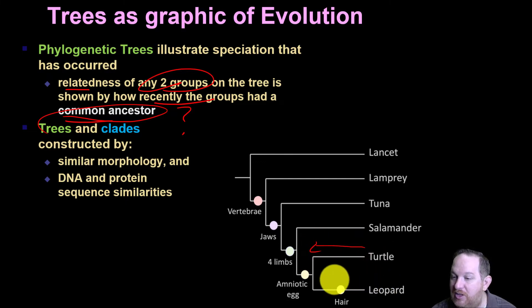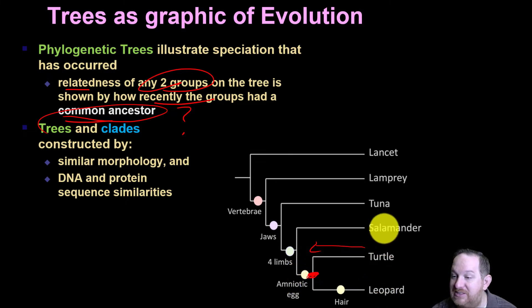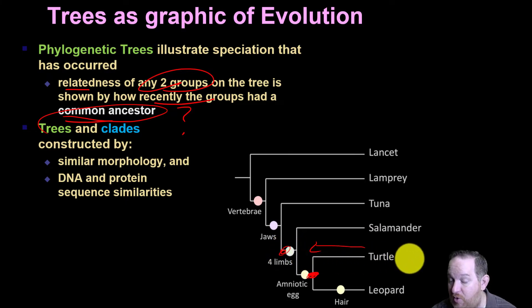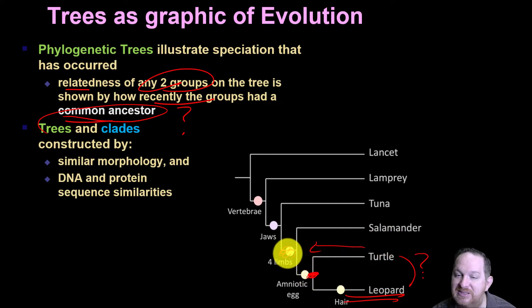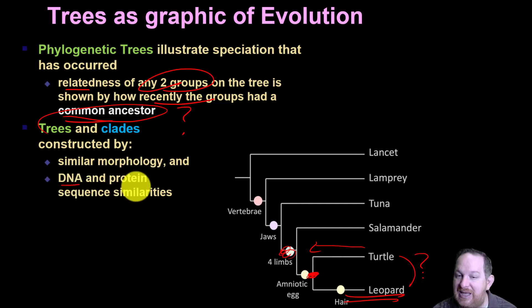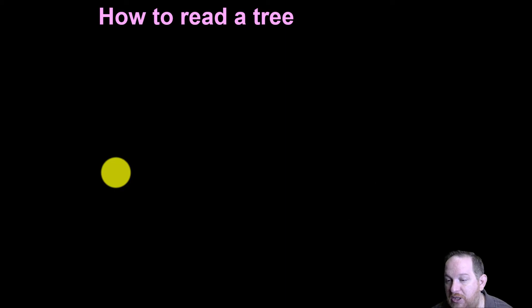For example, a turtle and a leopard — their most recent common ancestor is here. A leopard and a salamander are related, but their common ancestor was way back here. So if you had a question asking which two share the most recent common ancestor, it would be turtle and leopard — because for salamander and leopard, their ancestor is way back further. We construct these trees based on DNA, protein similarity, as well as shape, structure, and morphology.